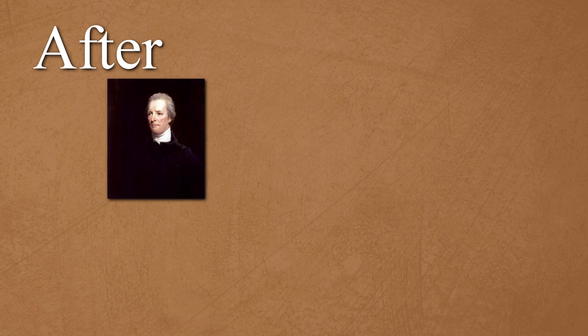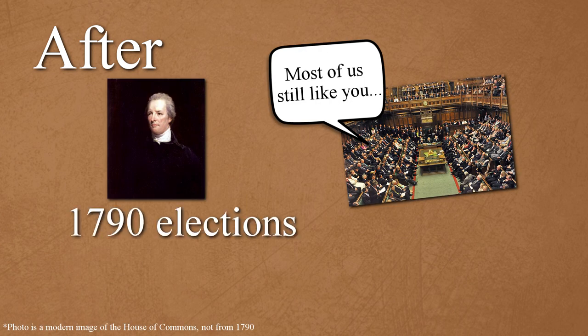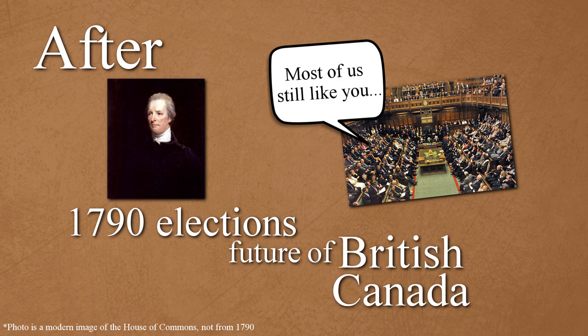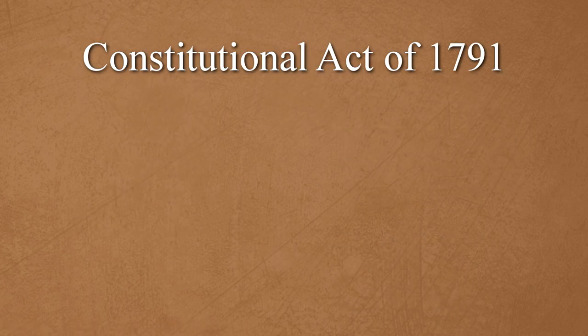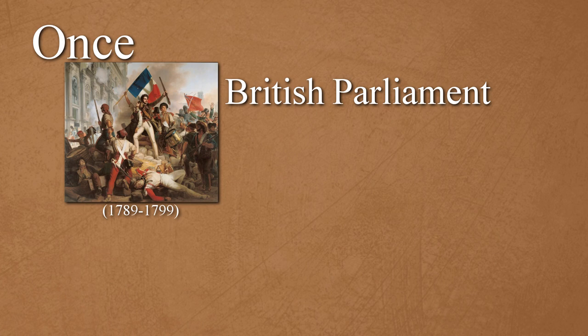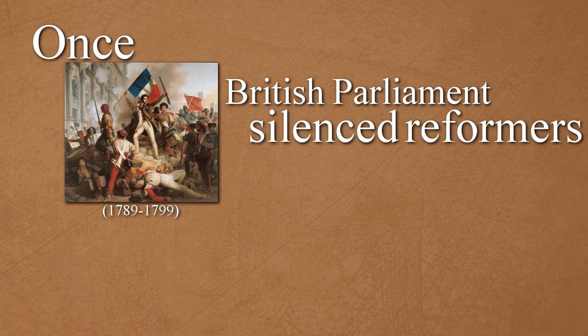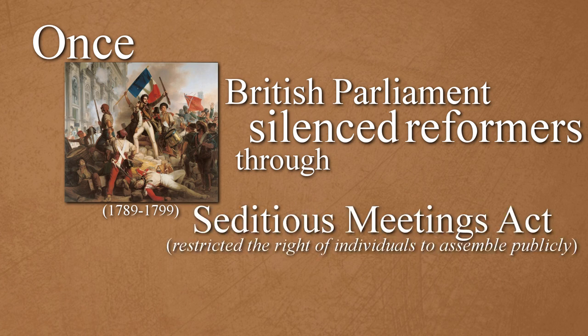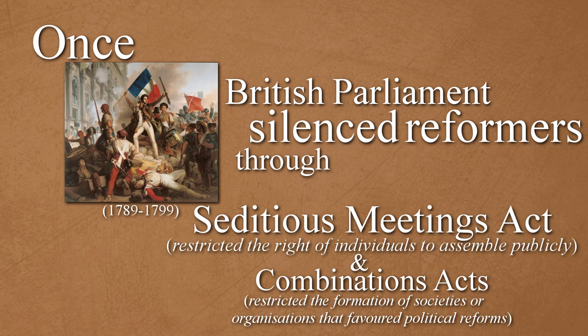After Pitt re-secured majority support in the 1790 general elections, he had to address the future of British Canada. The Constitutional Act of 1791 divided the Quebec province into two separate provinces, called Lower Canada and Upper Canada. Once revolution started in France, the British Parliament began to silence reformers inspired by the French, by creating legislative acts such as the Seditious Meetings Act and the Combinations Acts.